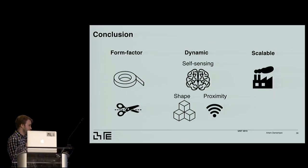So in conclusion, we made the sensor network in the form factor of masking tape. It's cutable. It's joinable. It's dynamic, so it's self-aware. It can know how many sensor nodes there are. You can sense sensing modalities, the shape, and they can sense proximity. And it's also scalable, so we made it to be manufacturable from the start.